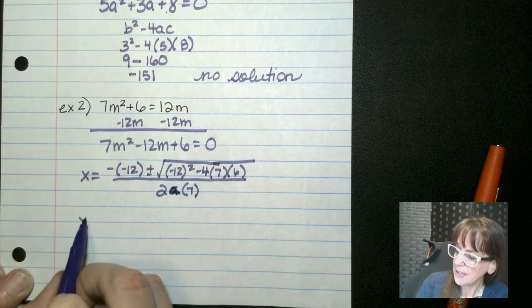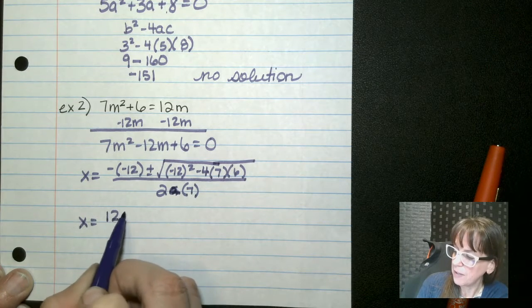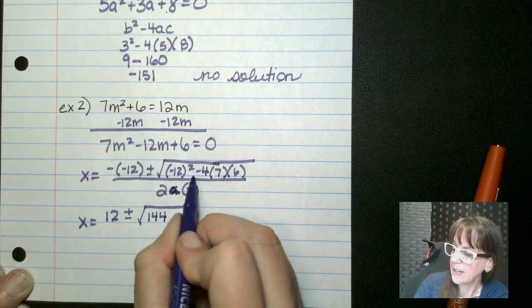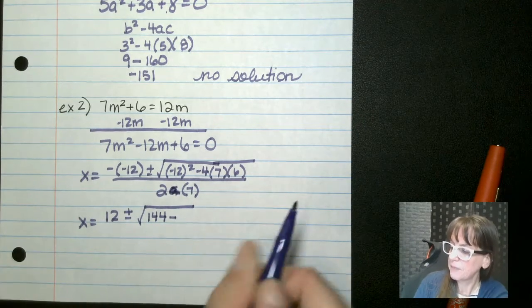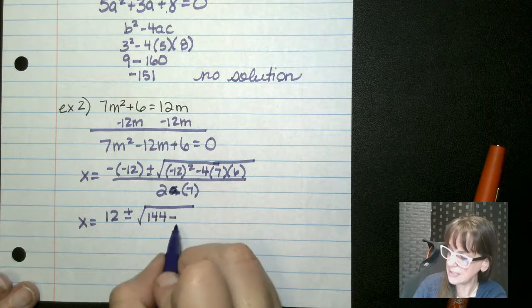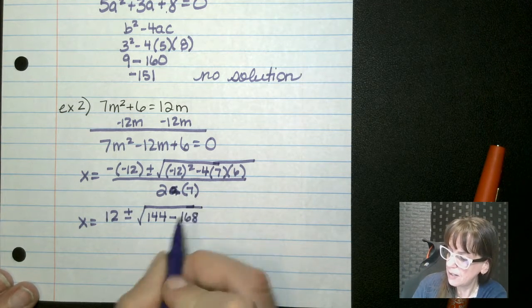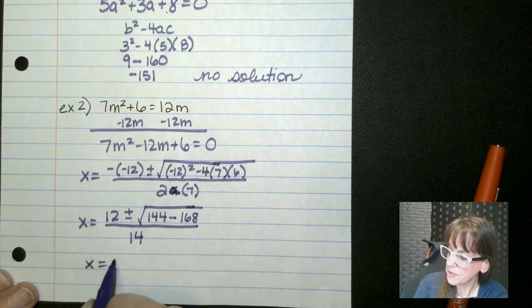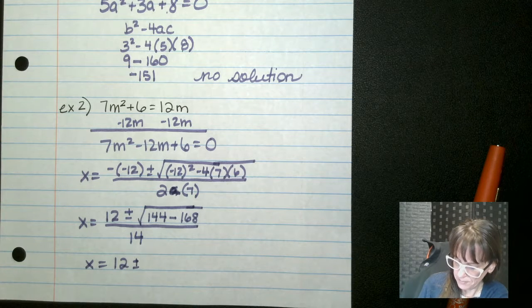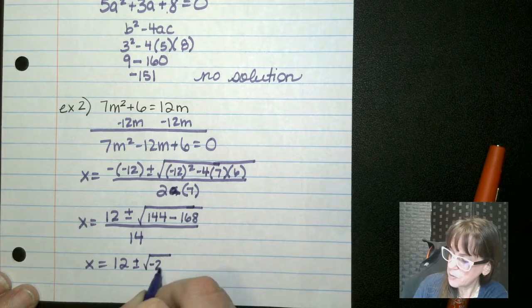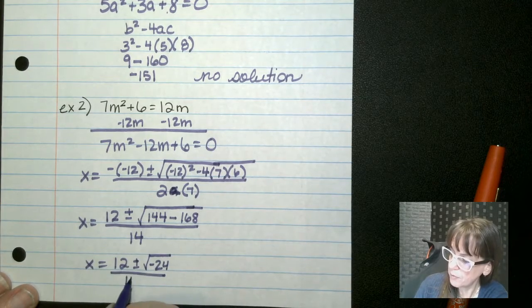So that's going to be x equals positive 12 plus minus, that's going to be 144. And then minus 4 times 7 times 6. We end up with 168 over 14. So x equals 12 plus minus square root of negative 24 over 14.